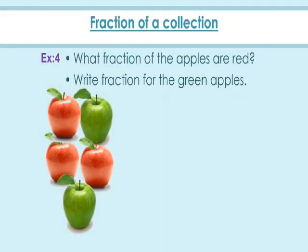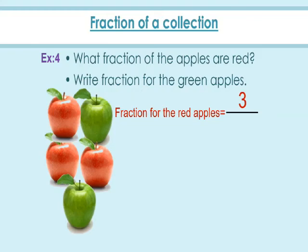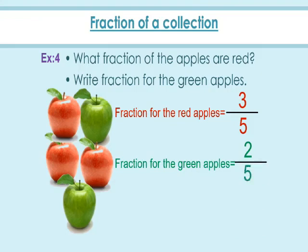Example 4: What fraction of the apples are red? Write the fraction for the green apples. Five apples are there; out of five apples, three apples are red and two apples are green. To write the fraction for red apples, write three by five. So three fifths of the apples are red. The fraction for the green apples is two by five.